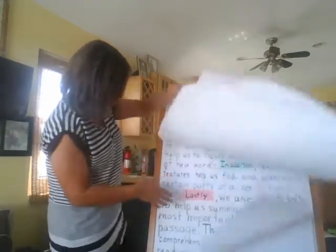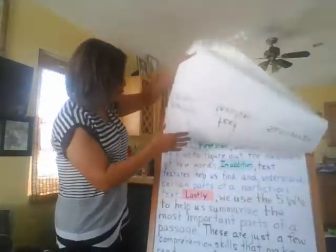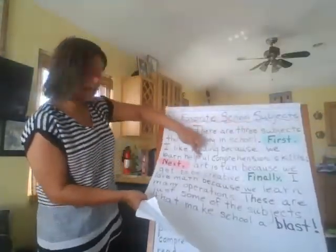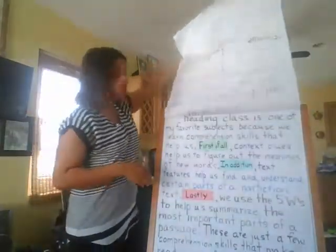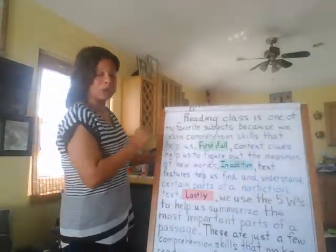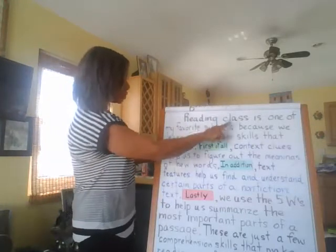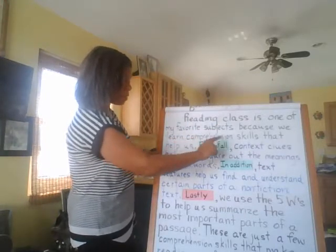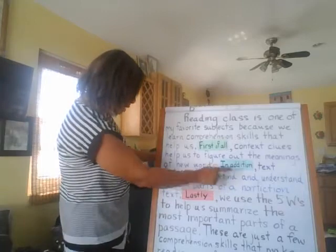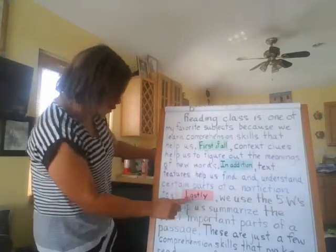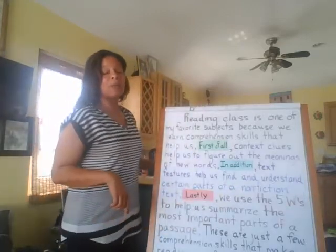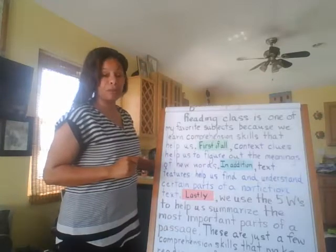Last time, we pulled out reading because that was our first supporting detail and we created a paragraph about that. We had to turn reading into a topic sentence and then we had three details that we talked about: context clues, text features, summarizing, and then a concluding sentence. Now we're going to be on paragraph number three.